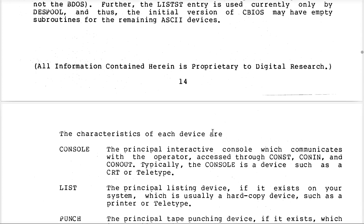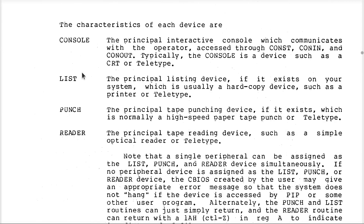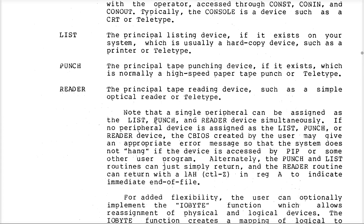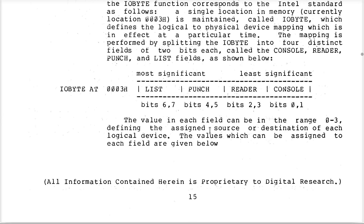We're going to get the console to work. The guide describes the nature of each device: the console is character-based, the printer is the list device, punch and reader like I said. For the reader we're going to return an end-of-file so the thing won't crash — anybody who reads anything will get an empty file. If you ever want to print something, I'm going to silently throw it away. Punch, same thing. Now they get into some advanced features that are optional — ignoring everything optional, let's keep it simple.